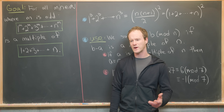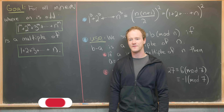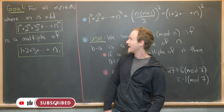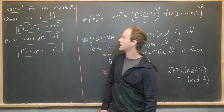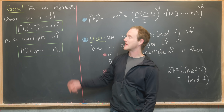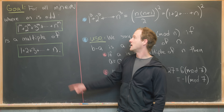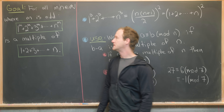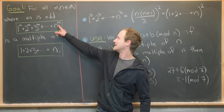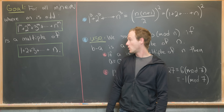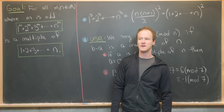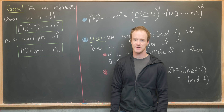Here we're going to look at an extension of what I like to call my favorite equation from elementary mathematics. We're going to show for all natural numbers m and n, where m is odd, that 1^m + 2^m + 3^m + ... + n^m is a multiple of 1 + 2 + 3 + ... + n. I think this is pretty surprising.